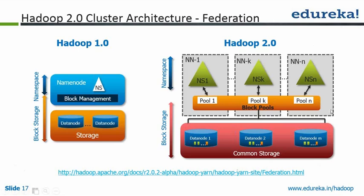Now all these NameNodes actually interact with the common storage. Say you have 10,000 data nodes. Each NameNode can be accessing X number of data nodes, but they will have their own namespaces.